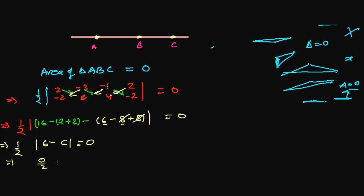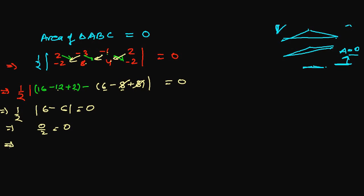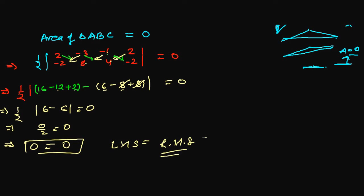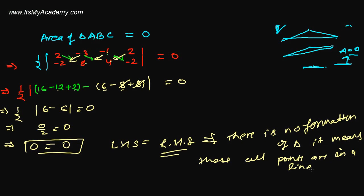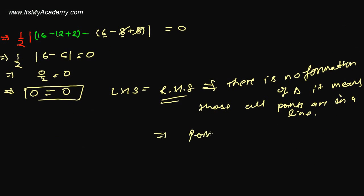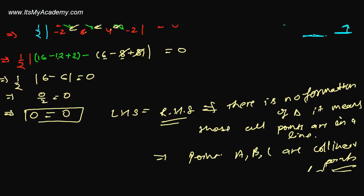So we get zero over two equals zero — zero equals zero. Left-hand side equals right-hand side. This shows there is no formation of a triangle. It means all those points are in a line. Hence, points A, B, and C are collinear points. Verified! See you in the next video with the next concept. Goodbye!